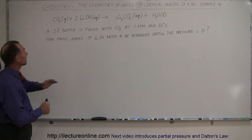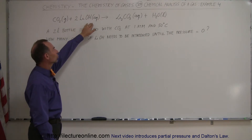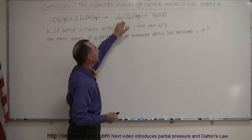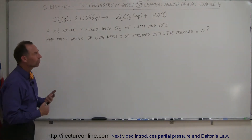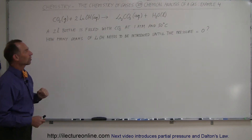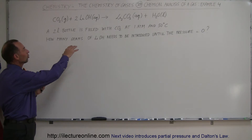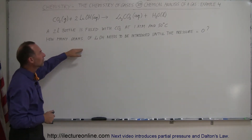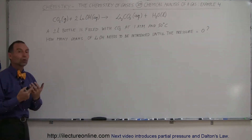We have an equation where we take carbon dioxide gas and add lithium hydroxide to it, which is an aqueous solution. It reacts with carbon dioxide, taking the CO₂ out of the atmosphere, ending up with an aqueous solution and water as a result. We start with a 2-liter bottle filled with carbon dioxide at 1 atmosphere and 50 degrees centigrade, and we pour in an aqueous solution of lithium hydroxide. How many grams will we need so that all of the carbon dioxide is used up and the pressure goes to zero?